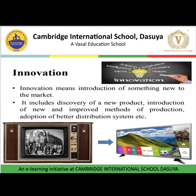The next objective is innovation. Innovation means introduction of something new to the market. It includes discovery of a new product, introduction of new and improved methods of production, and adoption of better distribution systems. Because there is cut-throat competition and so many competitors are present in the market, to compete with them or to lead in the market, it has become necessary to innovate — to introduce something new, new and variety of products, and new ways to manufacture goods to reduce cost and bring unique products for customers.